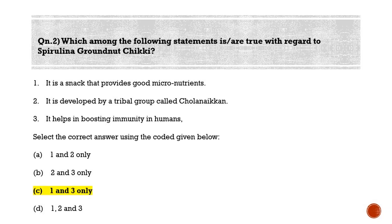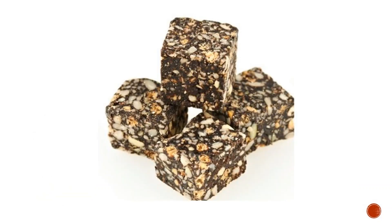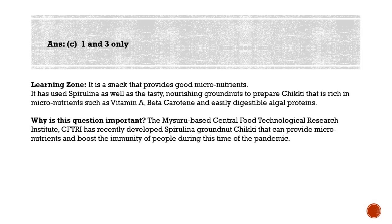Spirulina Groundnut Chiki is a snack that provides good micronutrients. It uses spirulina as well as nourishing groundnuts to prepare chiki that is rich in micronutrients such as Vitamin A, beta-carotene, and easily digestible proteins. The Mysuru-based Central Food Technological Research Institute (CFTRI) has developed the Spirulina Groundnut Chiki — not a tribal group. It can provide micronutrients and boost immunity during the pandemic.